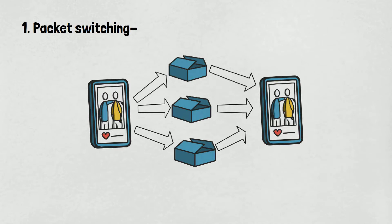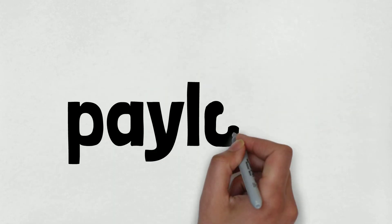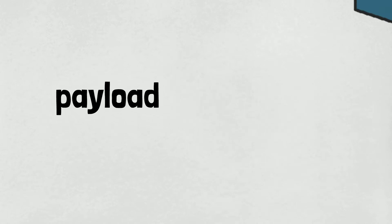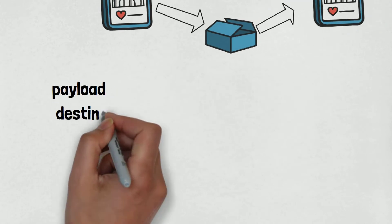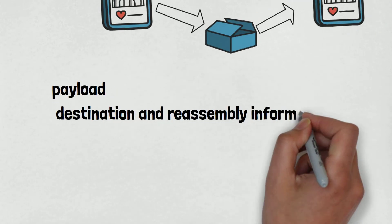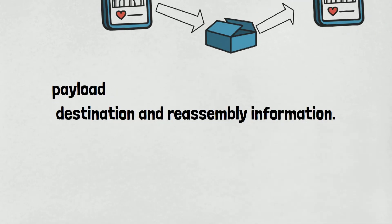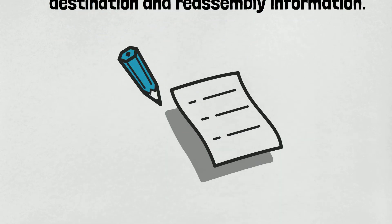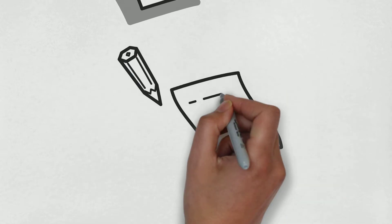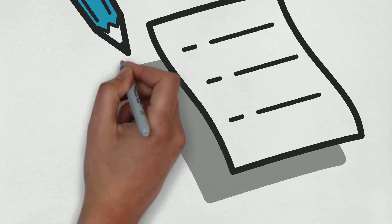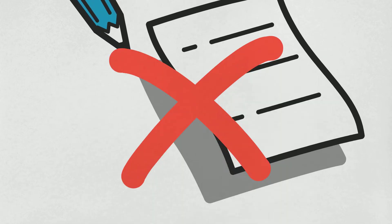Each packet contains a piece, called the payload, and an identifying header that includes destination and reassembly information. The packets are sent in triplicate to check for packet corruption. Every packet is verified in a process that compares and confirms that at least two copies match. When verification fails, a request is made for the packet to be re-sent.